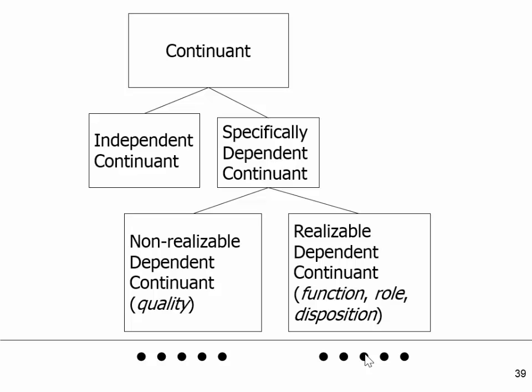We distinguish two kinds of specific dependence. On one hand, there are qualities like skin color — qualities are fully there if they are there at all. Your skin color is just there; it doesn't go in and out; it's even there in the dark. On the other hand, there are what we call realizable dependent continuants, which are not there all the time — they're only there when they're realized. An example would be the function of your hand to grasp something. This function is now being realized because I'm grasping something, but it's not being realized when I'm just holding my hand loosely in the air. Still, I have that function even when I'm not realizing it. Realizations are functionings — they're processes on the occurrent side rather than on the continuant side.